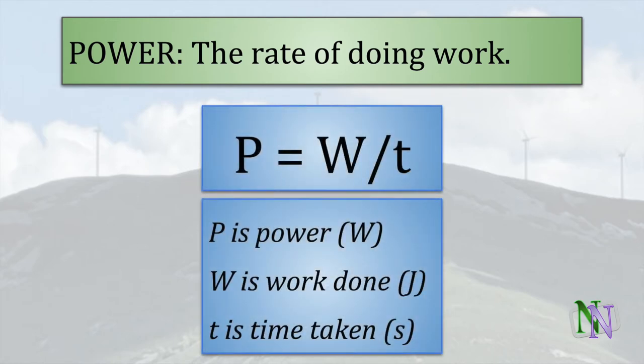Here is the formula. Power P is calculated as work done divided by time taken. This formula is not in the IB booklet because it's obvious from the definition of power.